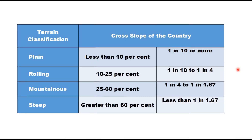Based on this, the Indian Roads Congress has divided terrain into four categories: plain, rolling, mountainous, and steep. Plain terrain is when the cross slope of the country is less than 10 percent (1 in 10 or more). Rolling terrain is when the country slope is 10 to 25 percent. Mountainous terrain is 25 to 60 percent, and steep terrain is greater than 60 percent, that is less than 1 in 1.67.